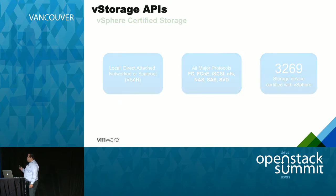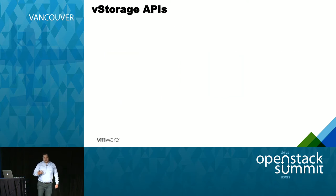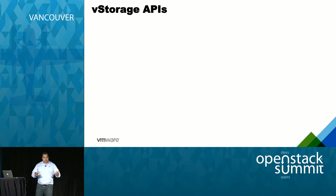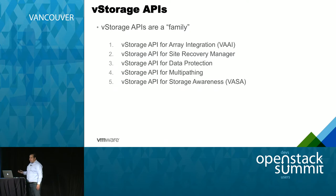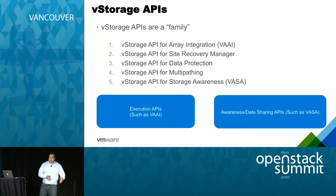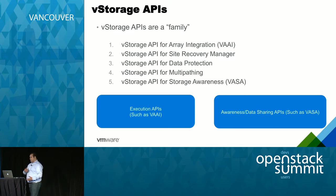It doesn't stop there. We have exciting integration with storage vendors. Looking at common VM operations — copying VMs, using templates, or using images in OpenStack — we worked with storage vendors to optimize that. This is where vStorage APIs came in. There's a family of APIs like VAI and VASA — roughly two groups: execution APIs that optimize operations at the storage layer, and awareness APIs that create a communication protocol between the array and vSphere.